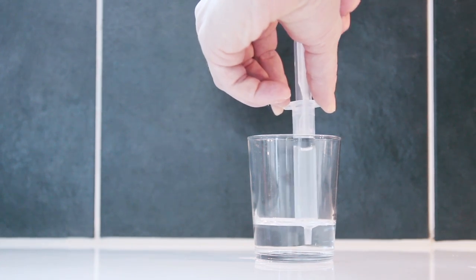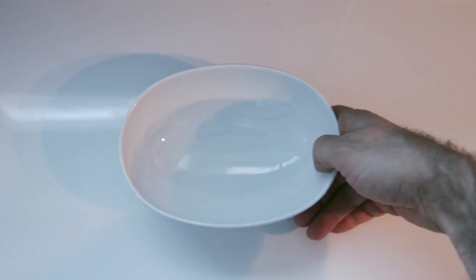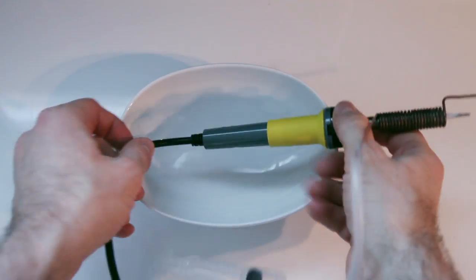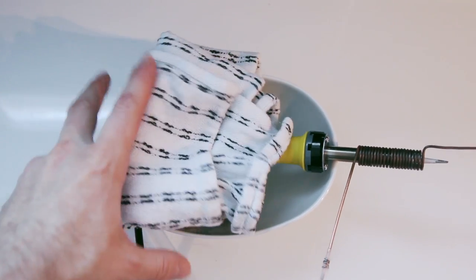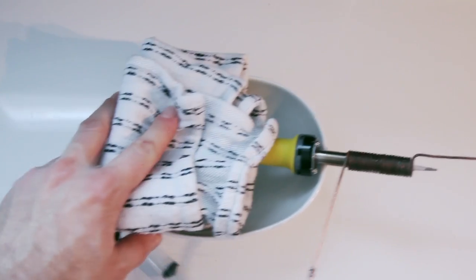So for the test run I'd like to use a stylish bowl and put the soldering iron—I'm sorry, the fog machine—in there, and also put something on it to keep it in place.